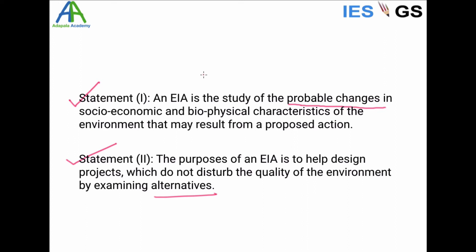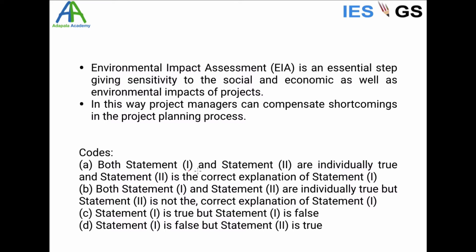These two statements are related: Statement two explains why we study probable changes in socio-economic and biophysical characteristics — because our aim is to help design projects that do not disturb the quality of the environment. So Statement two is the correct explanation of Statement one. Both statements are individually true and Statement two explains Statement one, so the answer is option A.